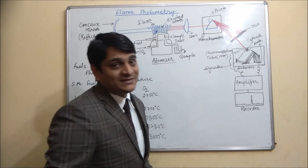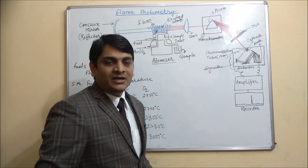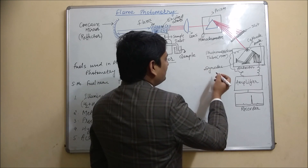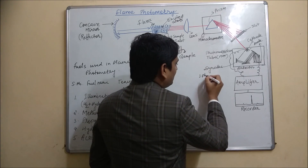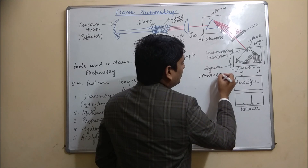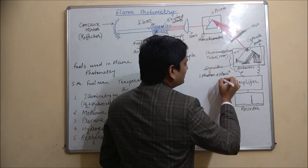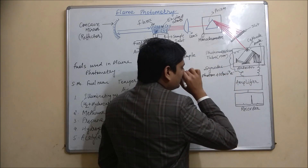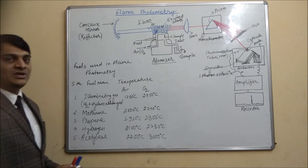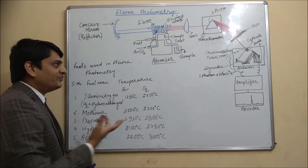After multiplication at the dynodes, the signal goes to an amplifier, which amplifies it, and ultimately a recorder records the signal and produces the spectra of flame photometry. Using one photon, the photomultiplier tube can produce up to 10⁶ to 10⁷ electrons. This is the complete fundamental instrumentation of flame photometry.